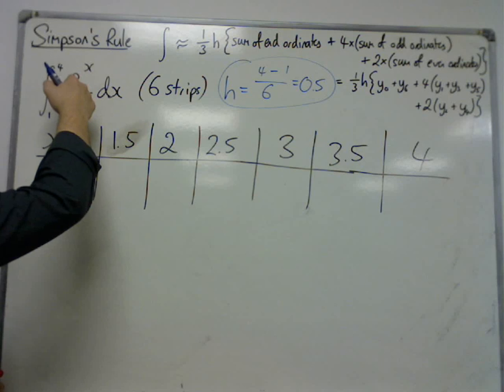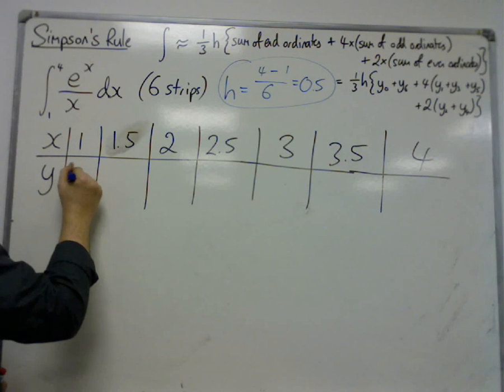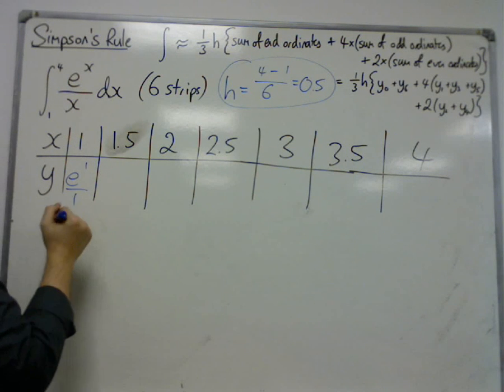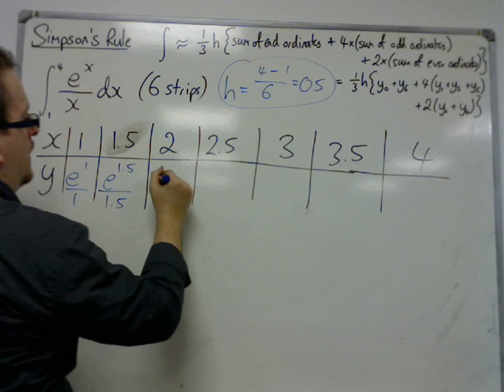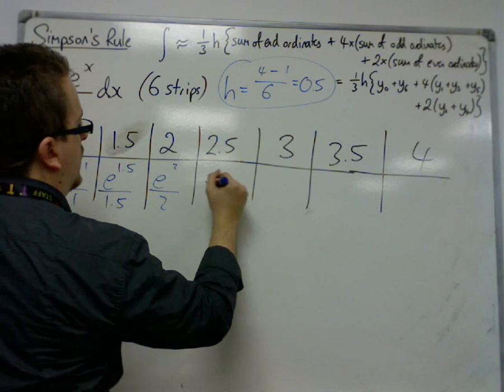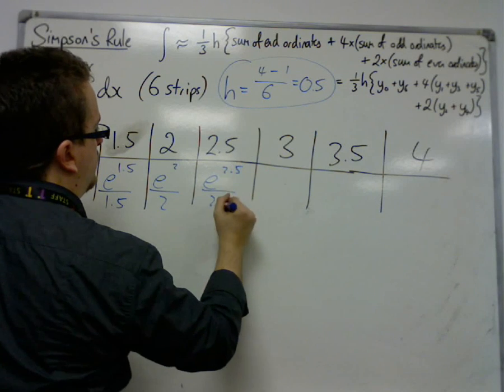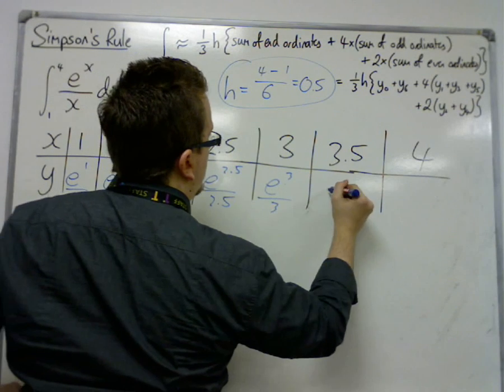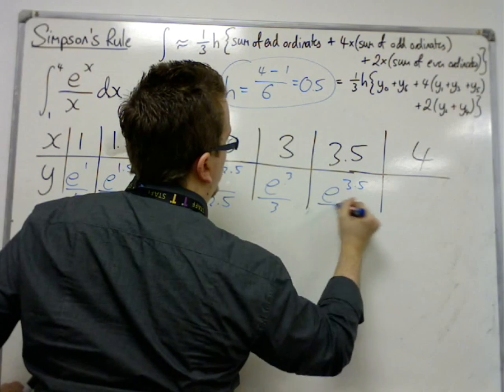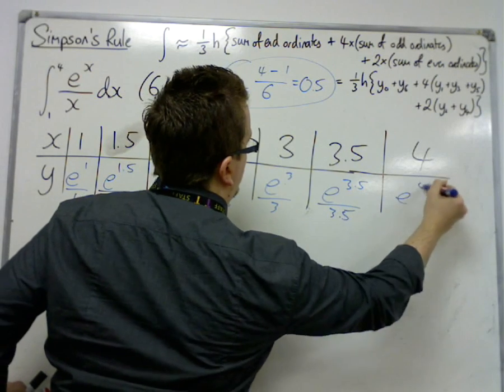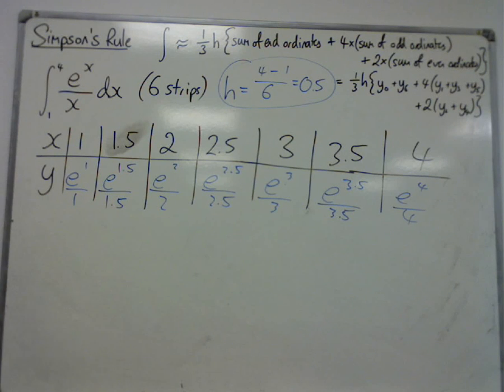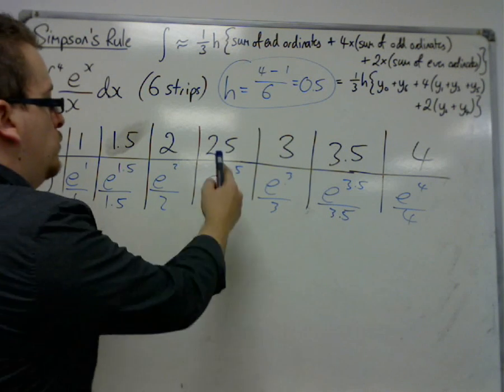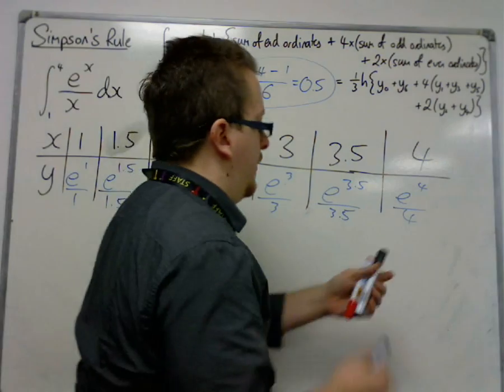So when X is 1, you have e to the 1 over 1, which is that. Then we have e to the 1.5 over 1.5, e to the 2 over 2, e to the 2.5 over 2.5, e to the 3 over 3, e to the 3.5 over 3.5, and e to the 4 over 4. So this is my y0, y1, y2, y3, y4, y5, and y6.